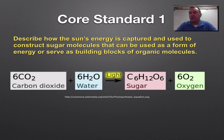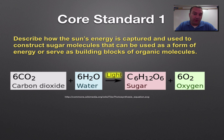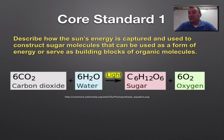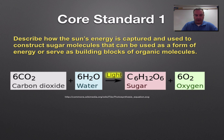The first core standard is: describe how the sun's energy is captured and used to construct sugar molecules that can be used as a form of energy and to serve as building blocks for other chemical reactions. On the screen we have the balanced chemical equation for photosynthesis: six carbon dioxide molecules joined with six water molecules, with the help of light, forming sugar and oxygen as a waste product.